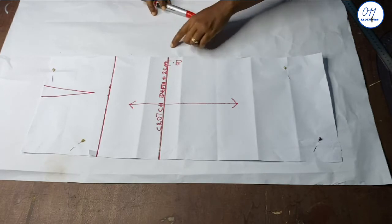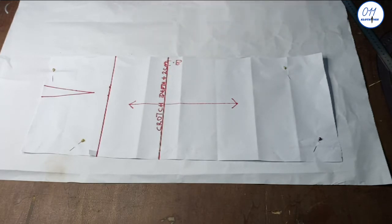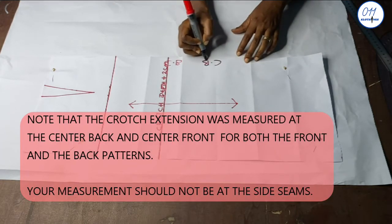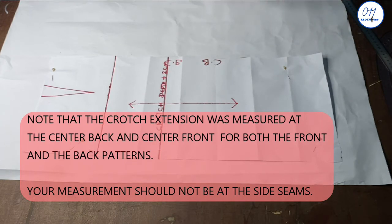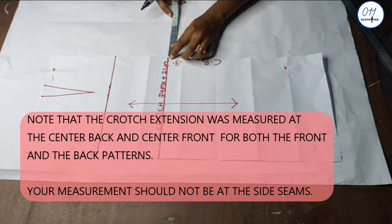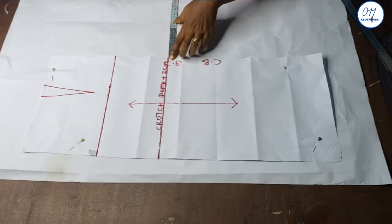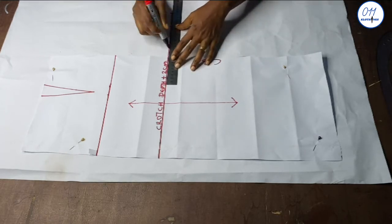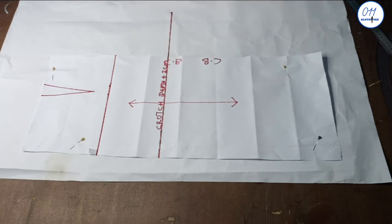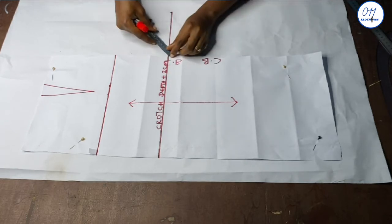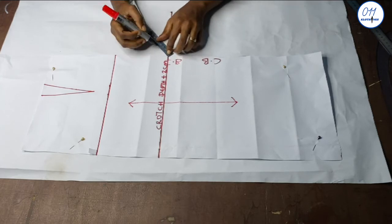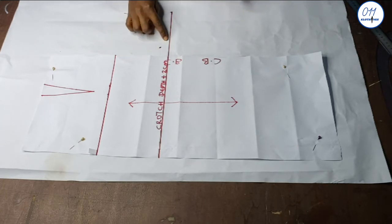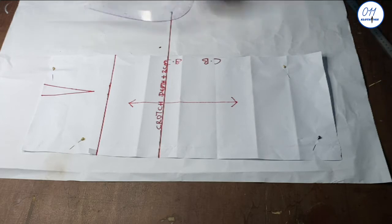I will measure the 15.4 centimeters at the center back on the crotch depth line. So I square the line like so. At this middle point I will measure a 4 centimeters guideline. I will now use this as a guide to draw my curve using the French curve like so.